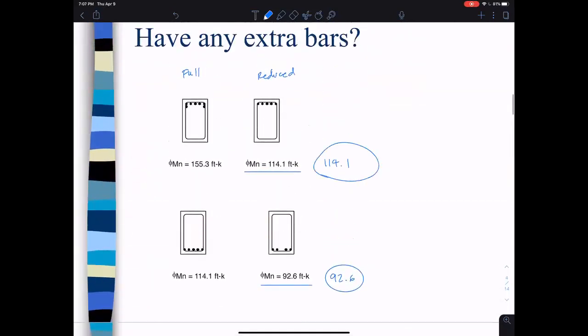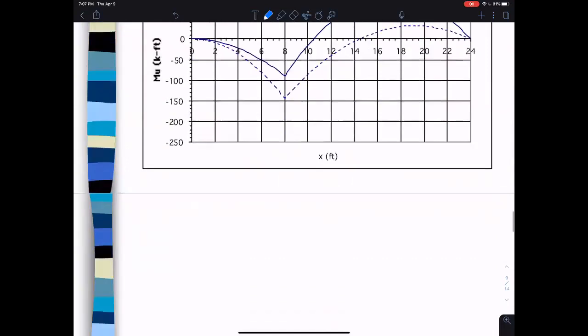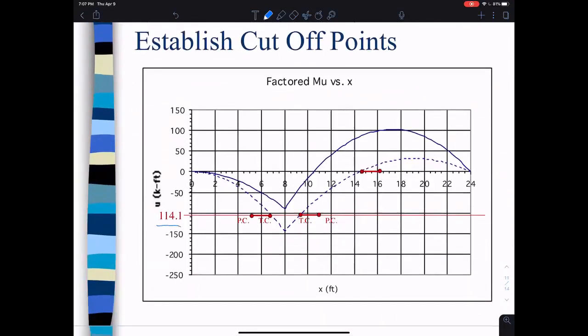For negative, we're looking for this number here, 114.1. So I come over here, find 114.1, just eyeball that in, come across, and I found that. I came out d again with a piece of paper, and that's where I'm proposing to cut it off. This, where you no longer need the bars, is d - 12 bar diameters or L over 16.